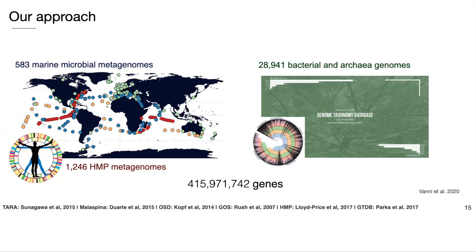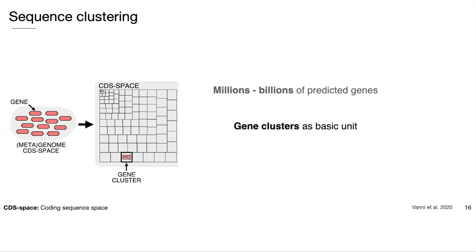I would like to guide you through the main steps and decision processes we used to build our approach. I will not include specific numbers, but will give some percentages to provide a more concrete overview of the process. To deal with the large amount of predicted genes — now more in the order of billions than millions — we decided to apply a sequence clustering approach and define gene clusters as our basic partitioning unit.